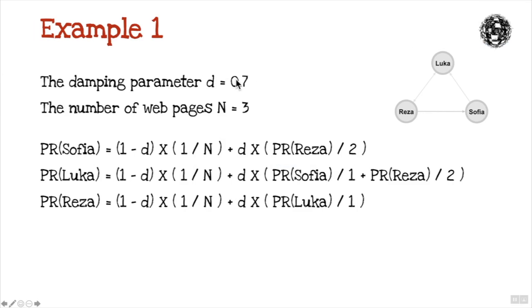And so if we go back to the calculation, damping factor 0.7. The number of web pages or social network nodes, N is 3, so in this case it's going to be 3. And then the damping factor times the other nodes connected to. So Sophie or Sophia has Rezar connected to her, and he has two outgoing nodes. That's why it's divided by 2. So Luca has Sophia connected to him, and she's only got one outward connection, so that's divided by 1. But Luca's also got Rezar connected to him, but he's got two outgoing, so that's why it's divided by 2. And then finally Rezar, Rezar's only got Luca connected, who only has one outgoing connection, and that's why that's like that.